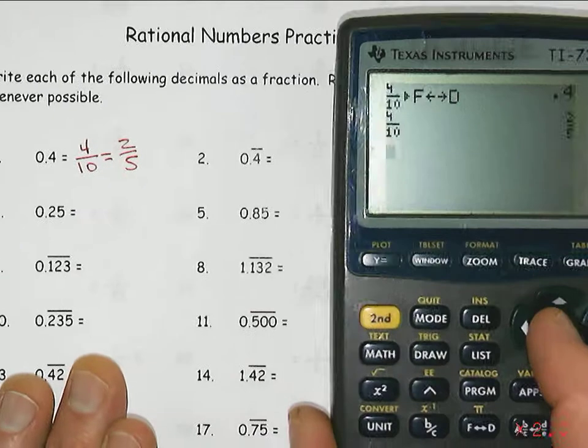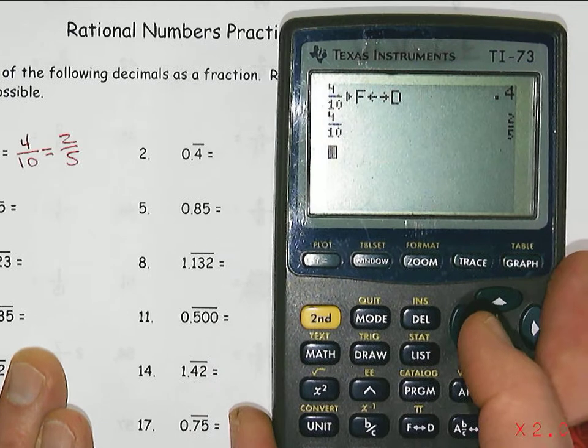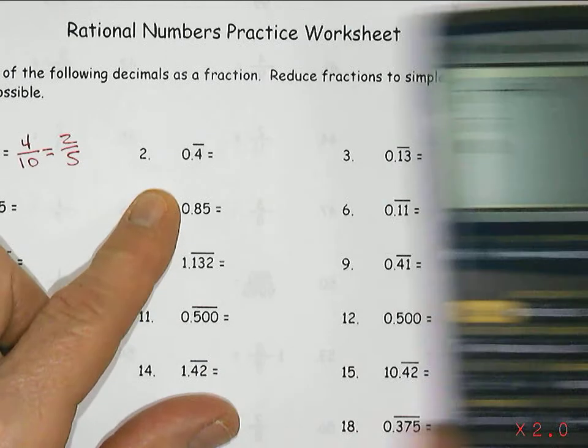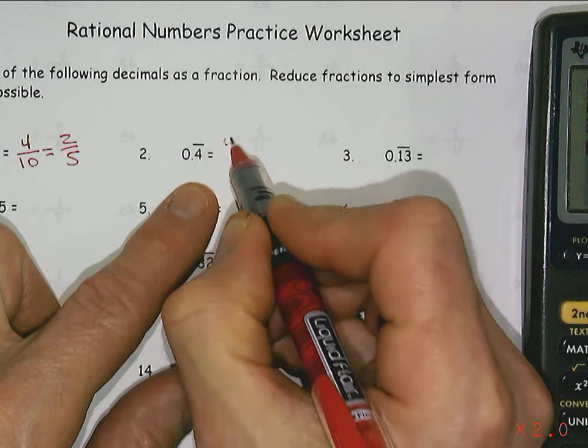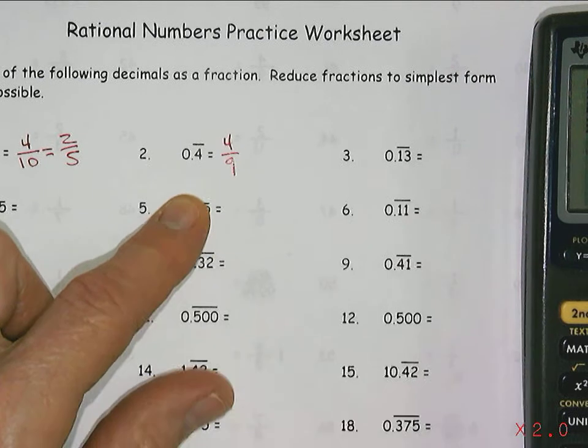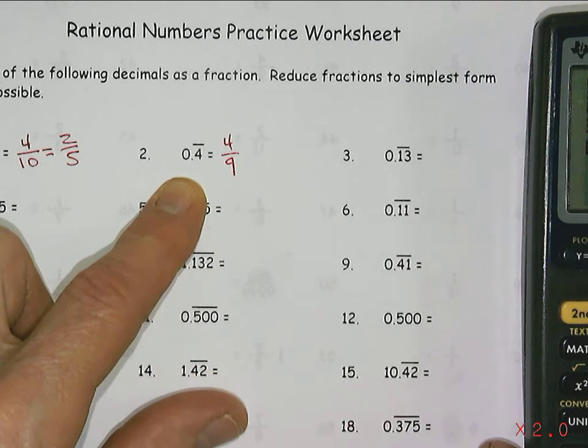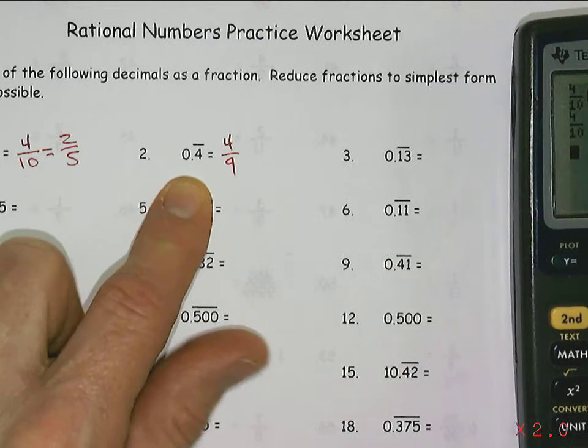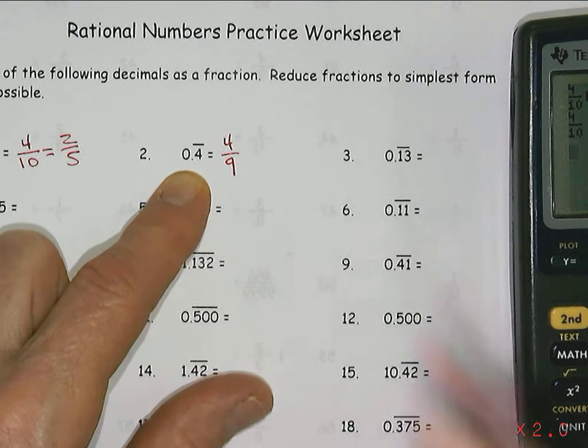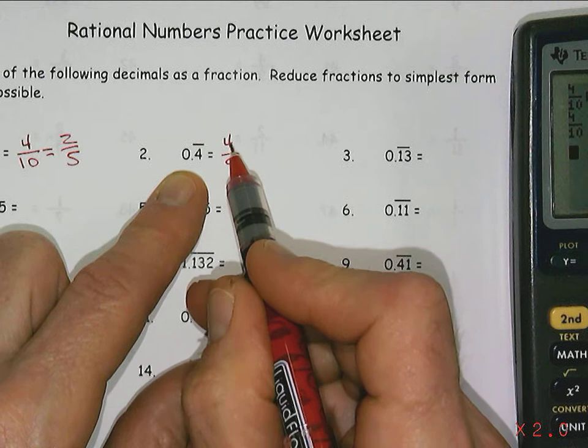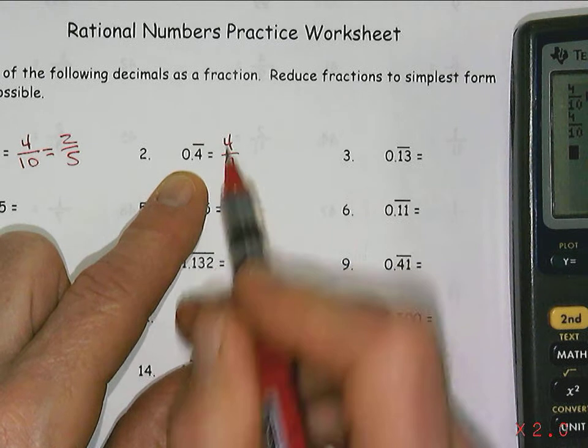Now with a repeating decimal, you can actually work that out as well. If you aren't sure and didn't know that this was four ninths, you can say, well, how do you know it's four ninths? One of the rules with repeating decimals is the number of digits that repeat is how many nines there are, and whatever the repeating digit is goes on the top.